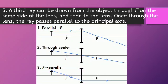Fifth, a third ray can be drawn from the object through F on the same side of the lens and then to the lens. Once through the lens, the ray passes parallel to the principal axis.